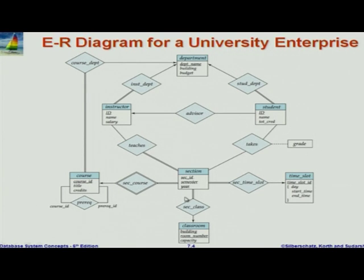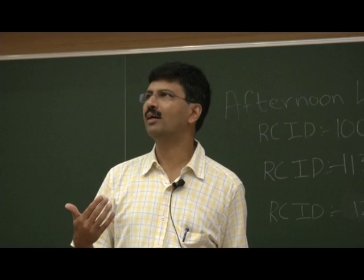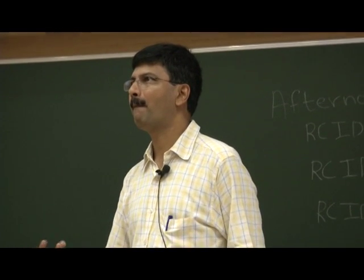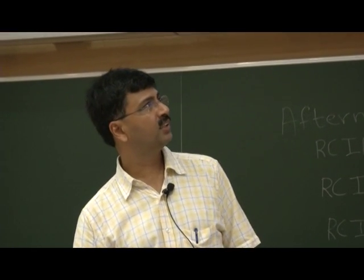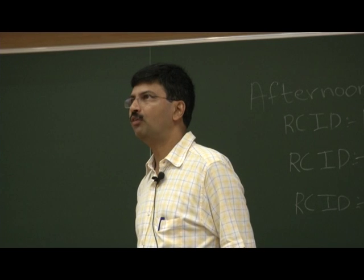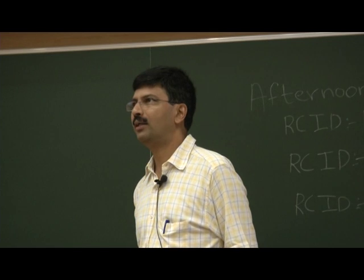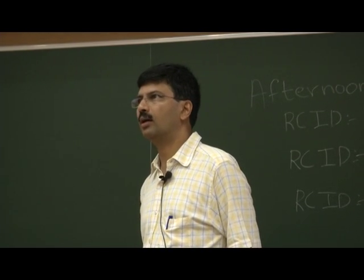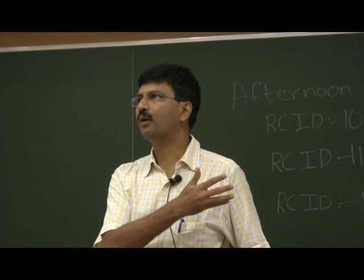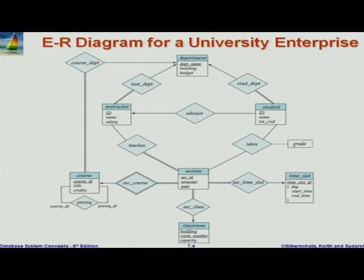Because section-classroom is not shown as a double diamond - identifying relationships are shown as double diamond - just because a classroom is a strong entity and section is a weak entity does not mean classroom identifies section. A section is not conceptually part of a classroom; it has an independent existence. In fact, the total relationship here might be questionable - maybe when I first create data, I may actually create sections without an associated classroom. So at a conceptual level, section is not existence dependent on classroom. It is existence dependent on course, and that is why we made the section-course relationship an identifying relationship.